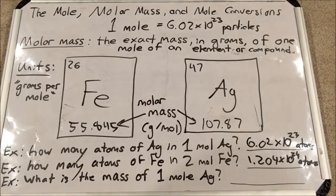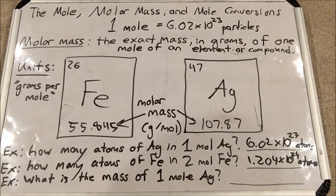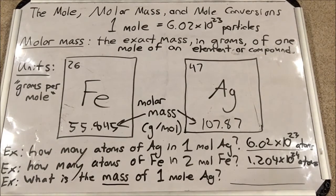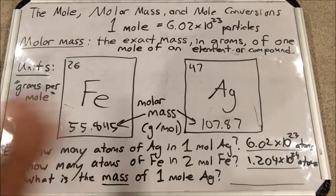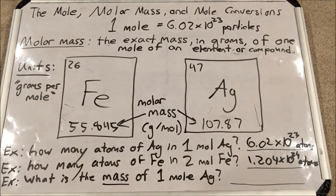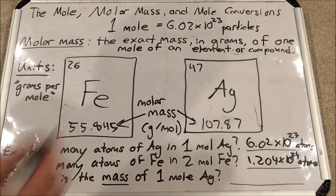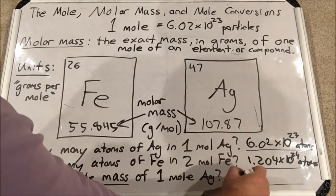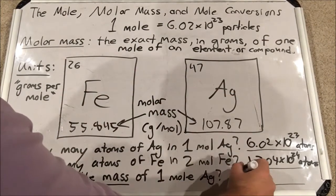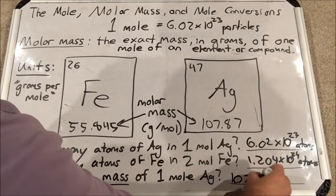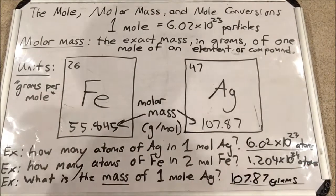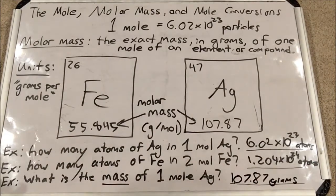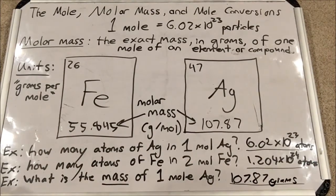This last question asks for something different: what is the mass of one mole of silver? The mass of one mole of silver is given by the molar mass itself — that number at the bottom. No calculators needed. You just write 107.87 grams of silver per one mole of silver.